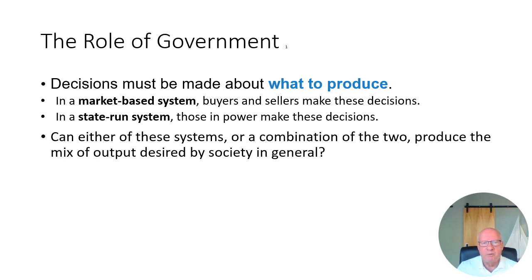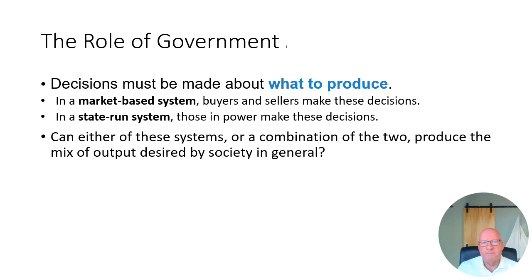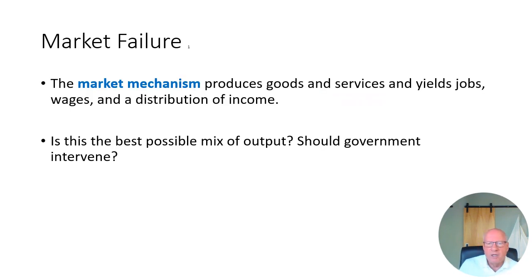In a state-run system, those in power make those decisions. If they decide we need more electric cars, they simply force it to happen by controlling the business firms, customers, price, or something else — governments can force decisions in a different direction. So, can either of these systems or a combination produce the mix of output desired by society? Can a market system achieve the right outcome, or does it need help from the government? The first concept we'll discuss to answer that question is market failure.